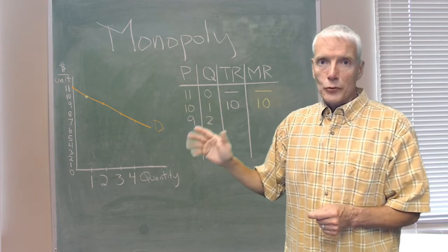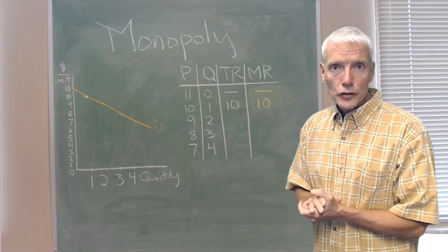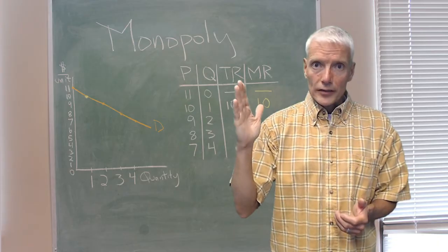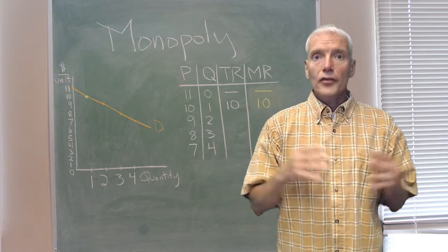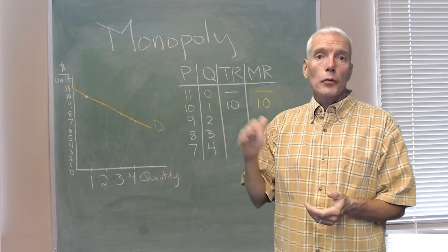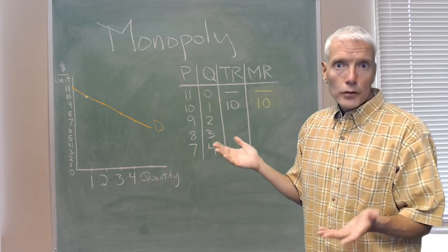but in order to sell that second one, it had to lower its price on the first unit by a buck. So it gets $9 as the price of the second one minus $1 it lost on the first unit that it otherwise could sell for $10. So the marginal revenue is $9 minus $1 or $8.